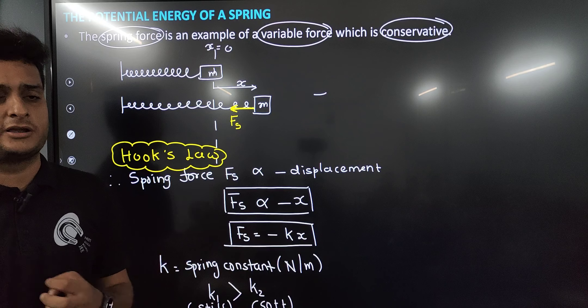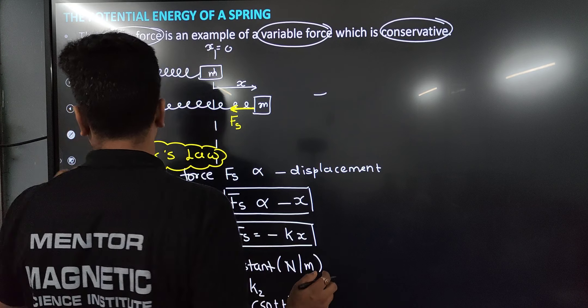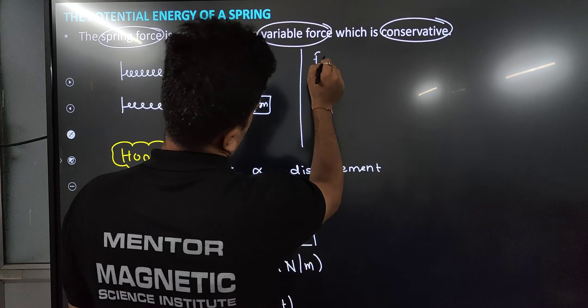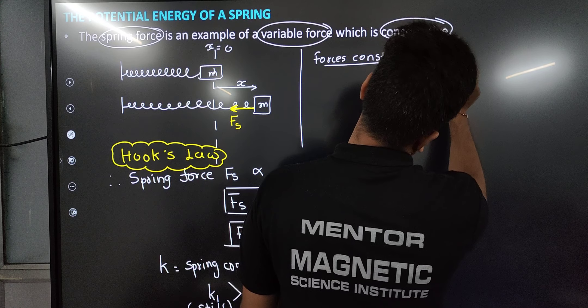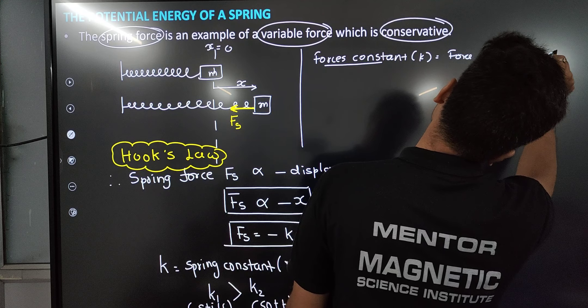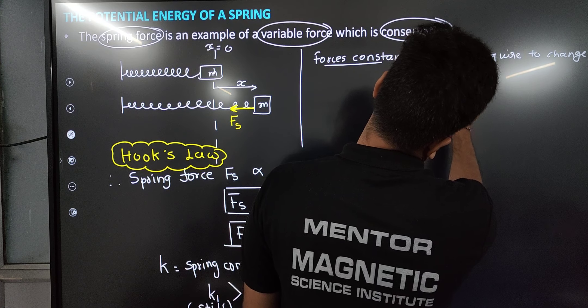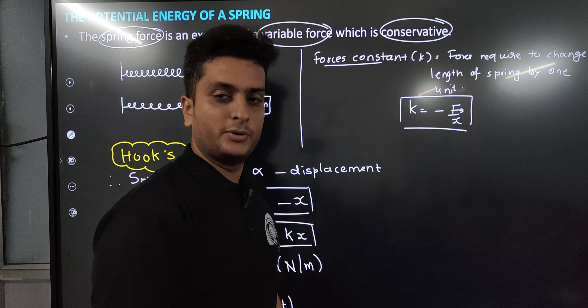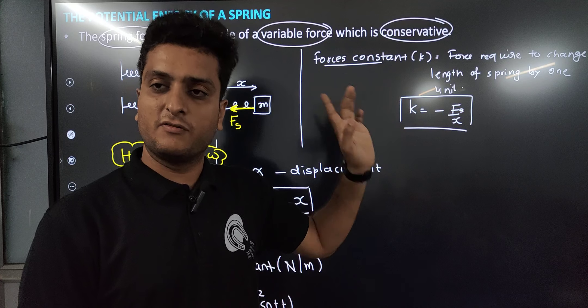The force constant k is defined as the force required to change the length of a spring by 1 unit. If you want to change the spring's length by 1 unit, the force you need to apply is called the force constant. So k = -F/x, which is the force required to produce unit elongation or compression.